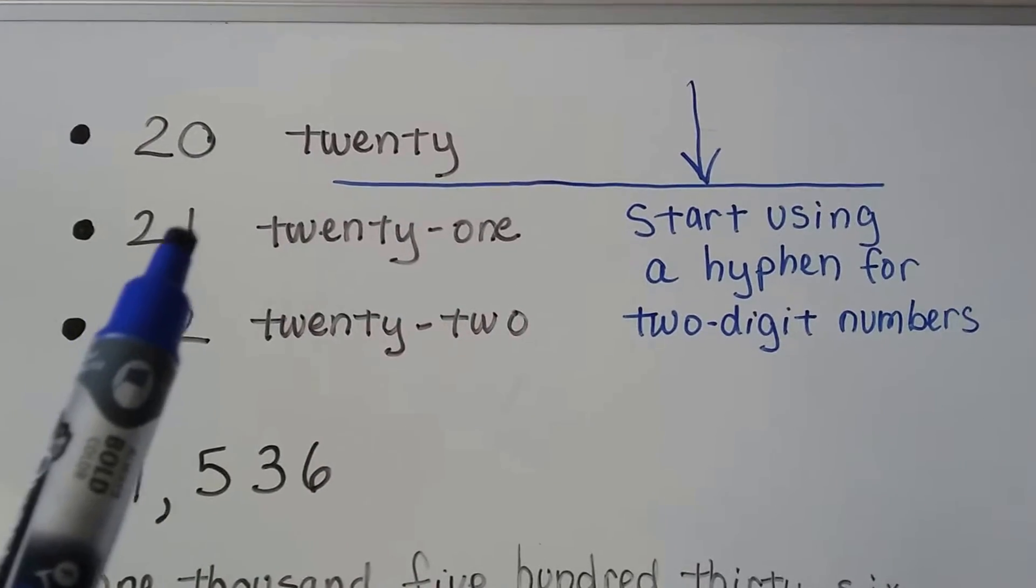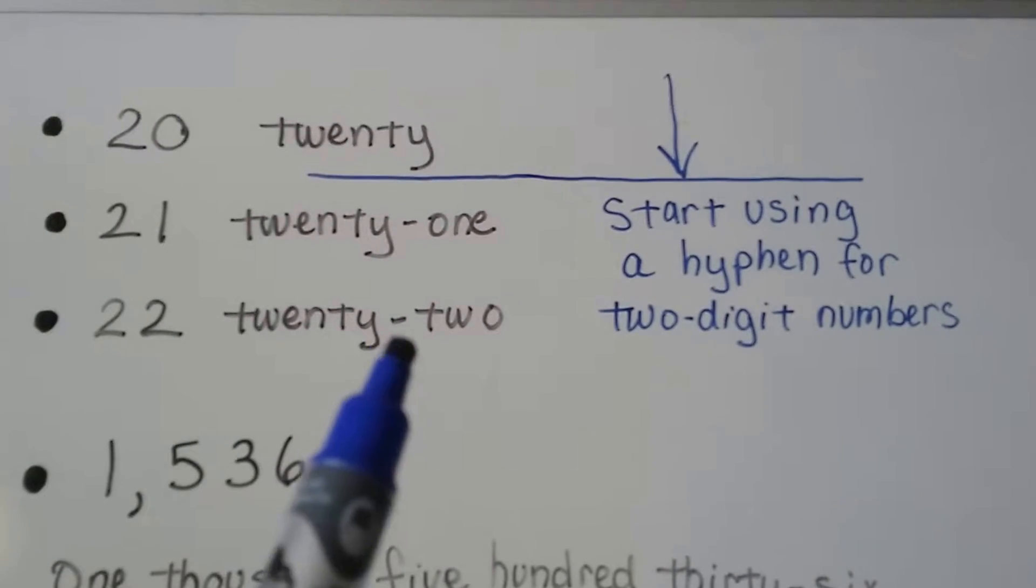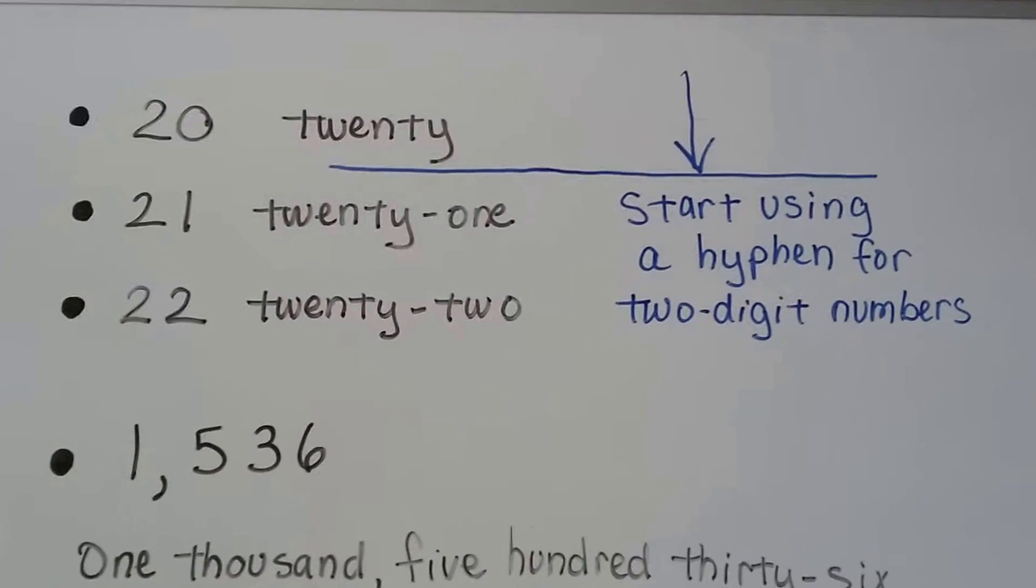This is a two-digit number, one, two, two digits. We write 20 hyphen one, 20 hyphen two. So from this point on, we're going to start using hyphens for our two-digit numbers.